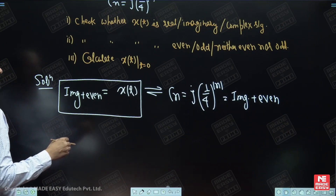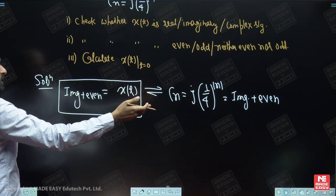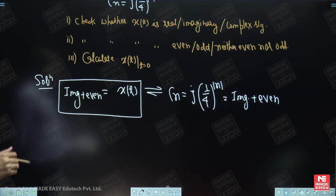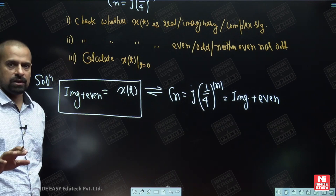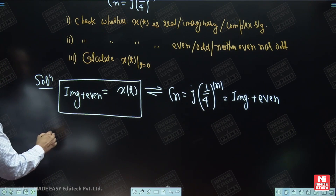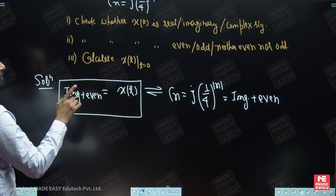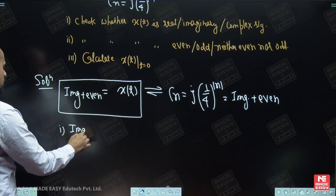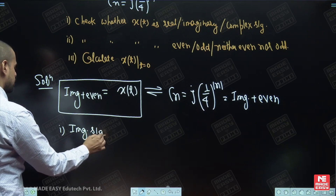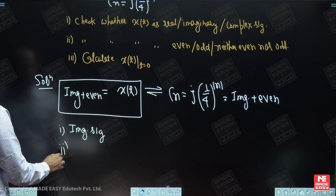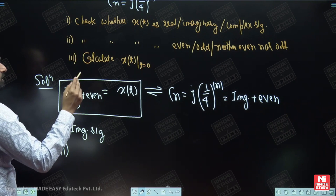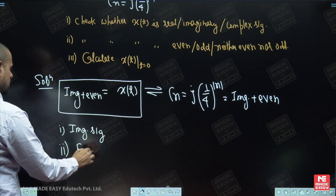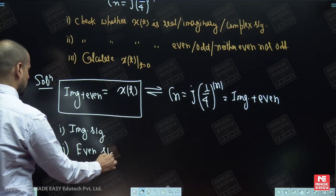Since C(n) is imaginary even, the time domain signal X(t) will also be imaginary even, according to the Fourier series X(t)–C(n) pair of continuous time Fourier series. For the first part, checking whether X(t) is even, odd, or neither: the answer is that signal X(t) is an even signal.